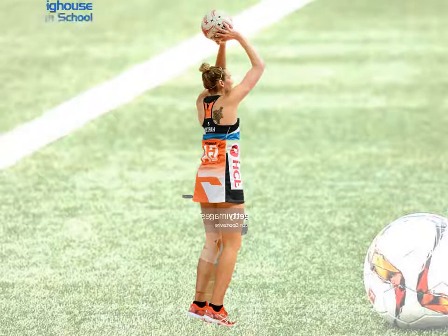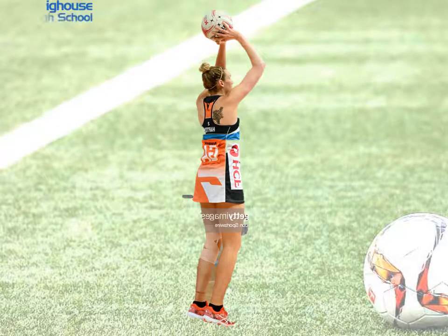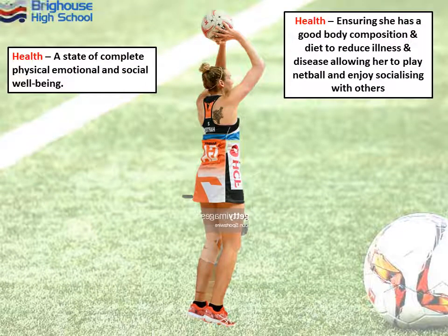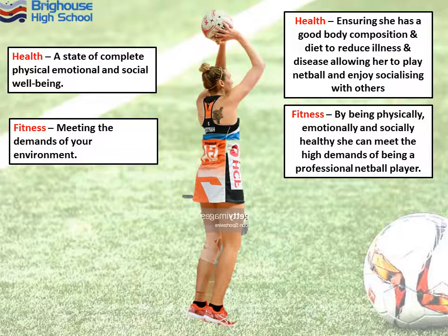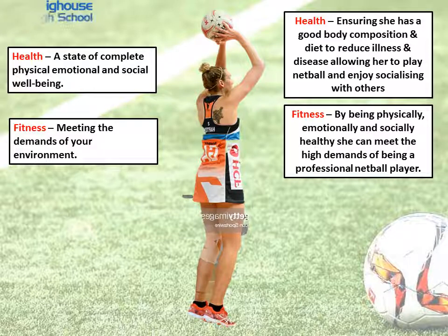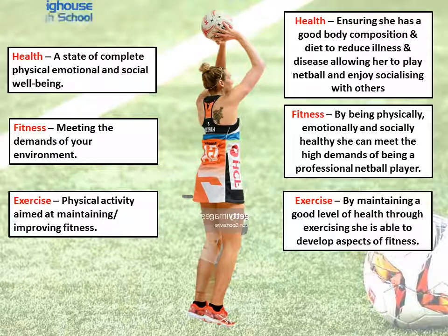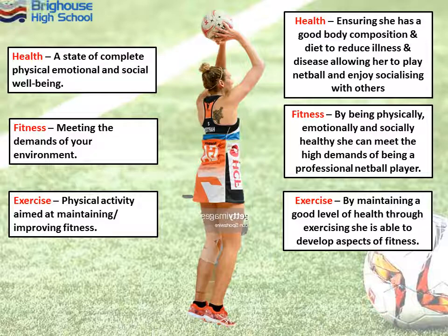What we're going to do now is link each of those four aspects to a particular sports star and show how each one can subsequently affect the other. Starting with health — this netball player ensures she has a good level of body composition and a good diet, which allows reduced levels of illness or disease, and in turn allows her to play netball and enjoy socialising with others. As a result of having good health, she is physically, emotionally and socially fit, and therefore she can meet the demands of being a professional netball player — which is exactly what fitness is about. By having good health and meeting the demands of her environment, she's able to exercise, and by exercising she'll improve her physical, emotional and social health as well as her fitness.